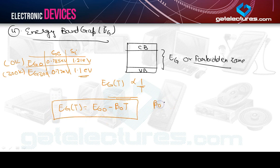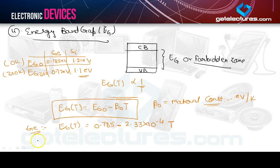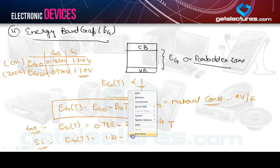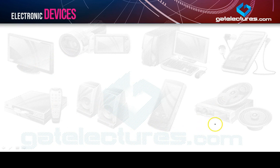The energy band gap is governed by the equation: E_g(T) = E_g0 − β₀T, where β₀ is a material constant with units of eV per Kelvin. For germanium: E_g(T) = 0.785 − 2.33×10⁻⁴ × T. For silicon: E_g(T) = 1.21 − 3.6×10⁻⁴ × T. So β₀ for germanium is 2.33×10⁻⁴ and for silicon is 3.6×10⁻⁴.